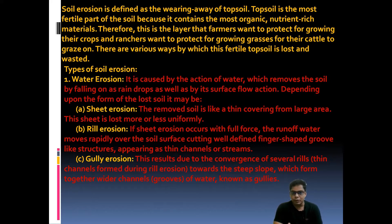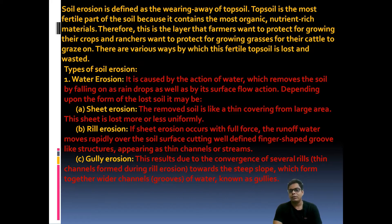There are many causes and types of soil erosion. Types of soil erosion can be divided: first, water erosion. India is considered prominently a monsoon rainfall country, so water erosion is caused by the action of water, which removes soil by falling as raindrops as well as by surface flow action.